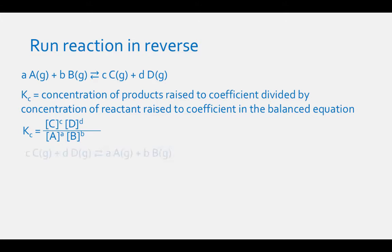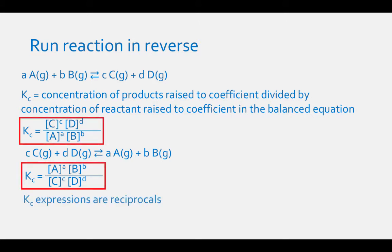If we reverse the reaction direction and have C (gas) plus D (gas) in equilibrium with A (gas) plus B (gas), Kc will then equal the concentration of A raised to the power of a, times the concentration of B raised to the power of b, divided by the concentration of C raised to the power of c, times the concentration of D raised to the power of d. Comparing the two Kc expressions, we notice they are reciprocals of each other. Therefore, K_forward equals 1 over K_reverse for all equilibrium reactions.